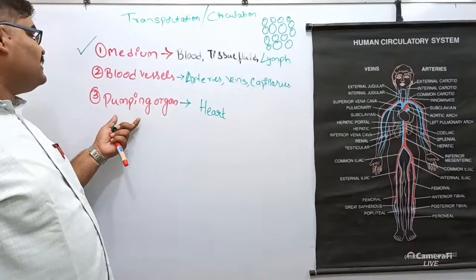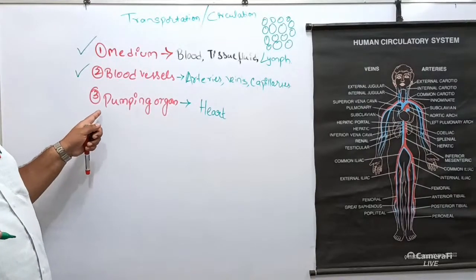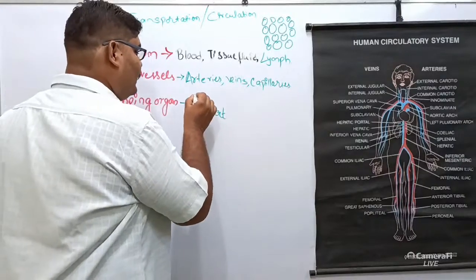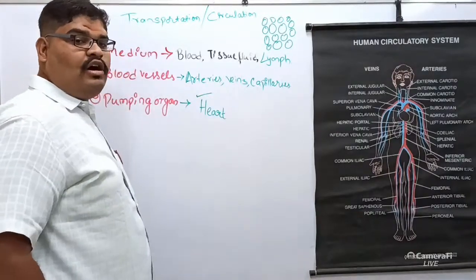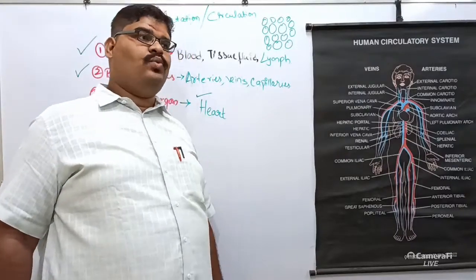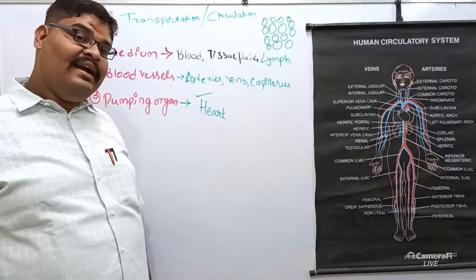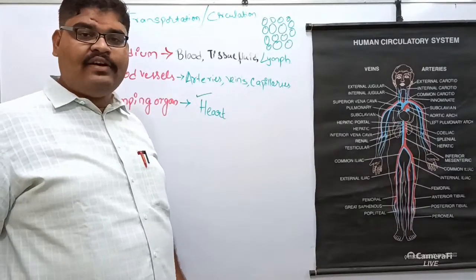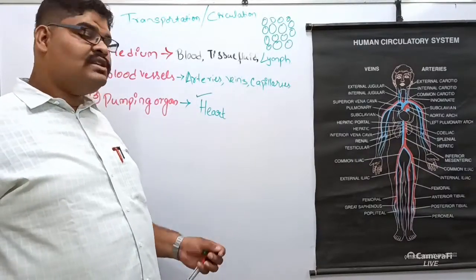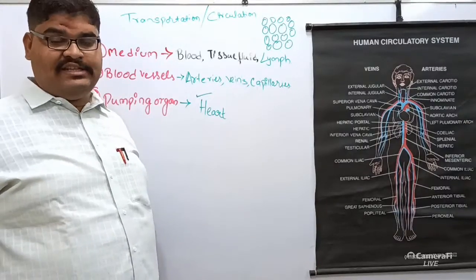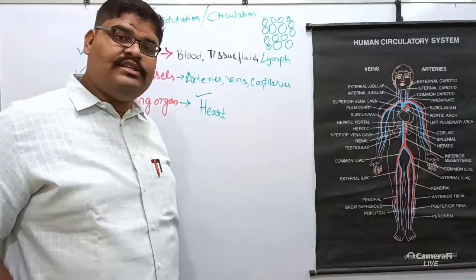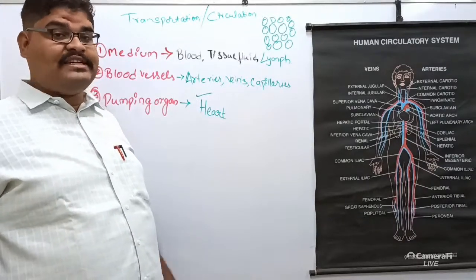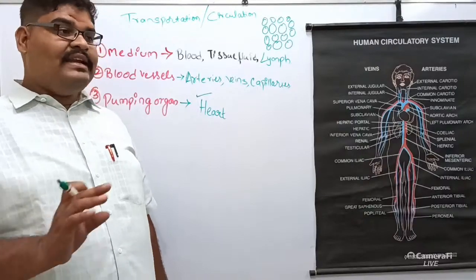The last component is the pumping organ — the heart. Many people confuse the functions of lungs, heart, and kidney. To be very specific, their functions are entirely different. The lungs help in oxygenation — they add oxygen to the blood and take away carbon dioxide from the blood. Addition of oxygen and elimination of carbon dioxide is the only function of the lungs. Then coming to the heart...